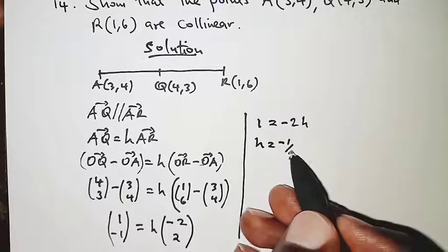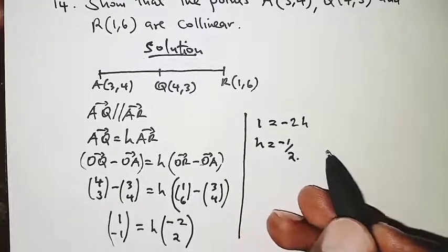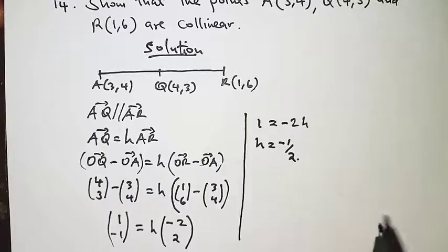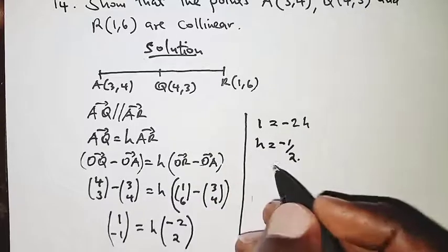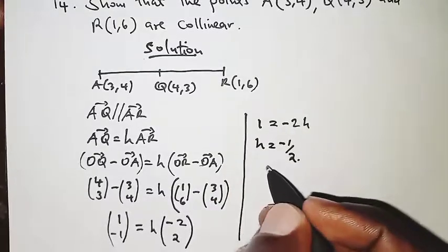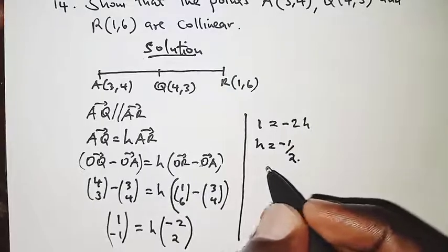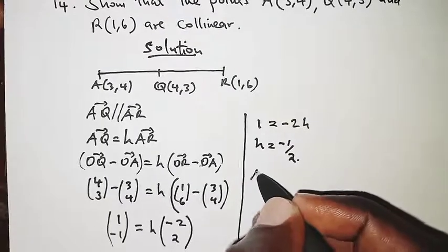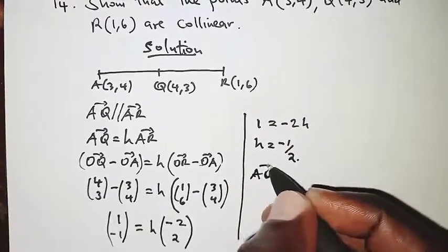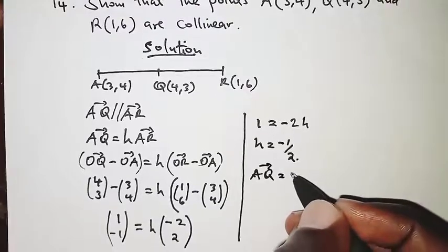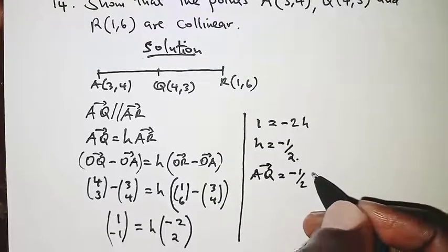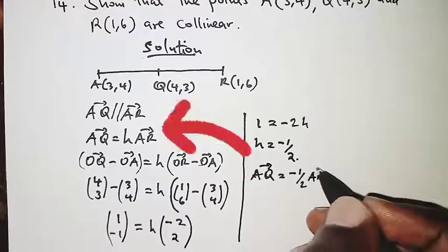Negative half is a scalar, so that simply means we should be having something like AQ is equal to negative a half of AR.